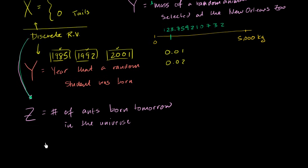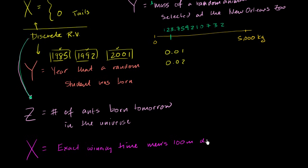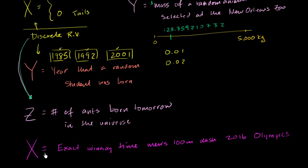Let's say random variable X is now the exact winning time for the men's 100-meter dash at the 2016 Olympics — not the time you see on the clock, but the precise time from the starting gun to crossing the finish line. Is this a discrete or continuous random variable?